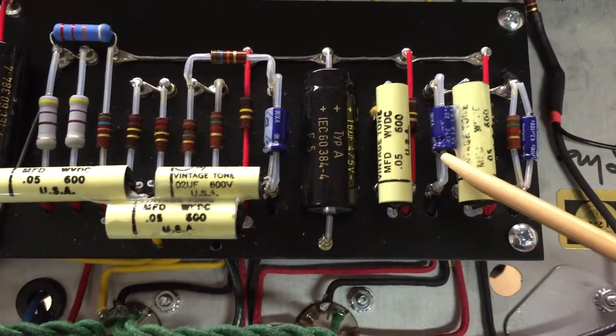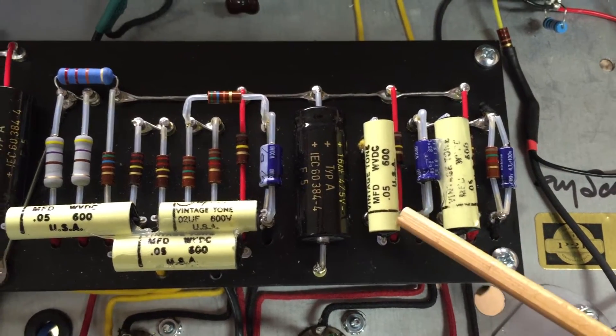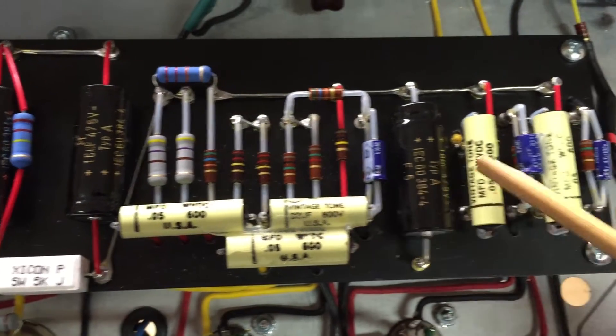All these coupling caps here that you see that are 0.05, the originals are 0.1. This will dump a lot of that farty bass out of there.